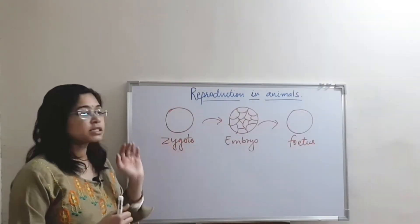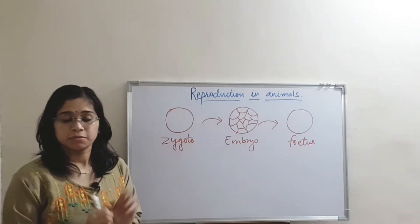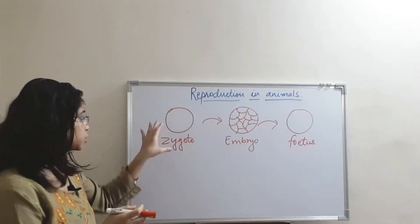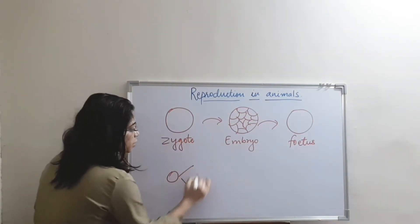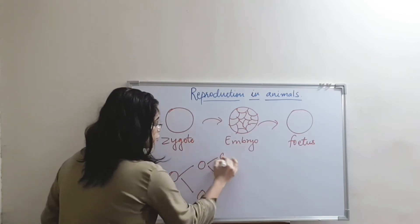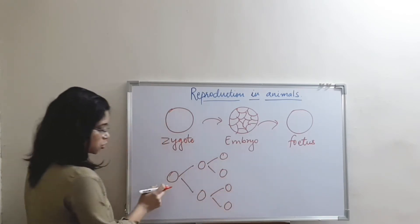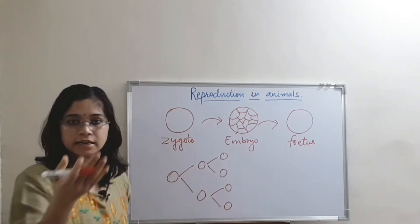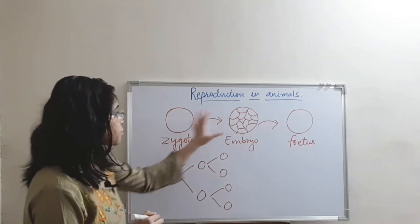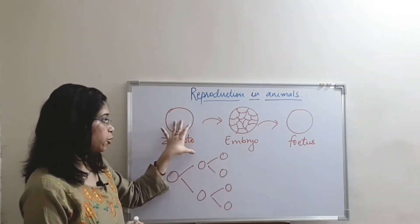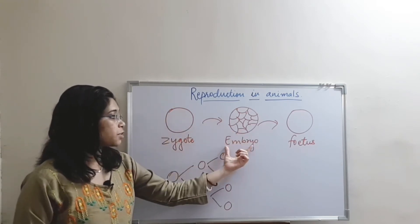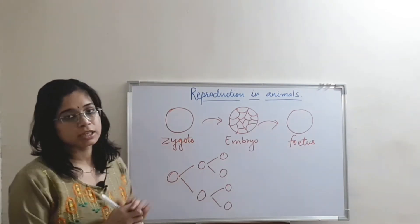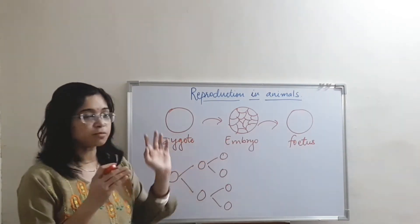Zygote is a single-celled structure but it contains two nuclei, because the male and female gametes both donate their nuclei to this zygote. This single-celled structure will divide into two, then four, then eight cells and so on. After further division, it will form an embryo. Zygote has just only a single cell whereas embryo has many number of cells.